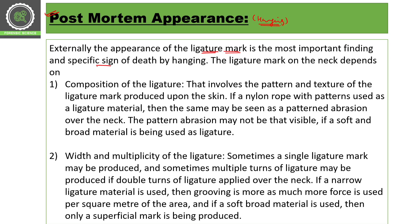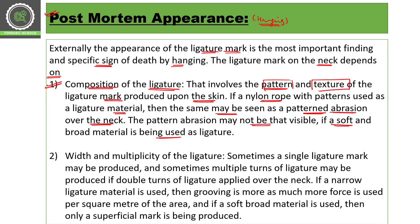The ligature mark is a really important and specific sign of death by hanging. The ligature mark on the neck depends on multiple factors. The first factor is the composition of ligature — the composition of the ligature used for hanging determines the pattern and texture of the mark produced on the skin. If a nylon rope with a pattern is used, that pattern may be seen as an abrasion on the neck. If a soft and broad material is used as a ligature, the pattern abrasion may not be as visible.